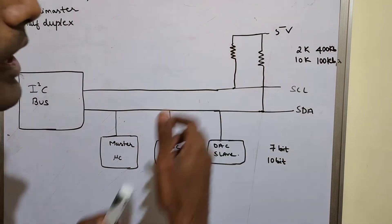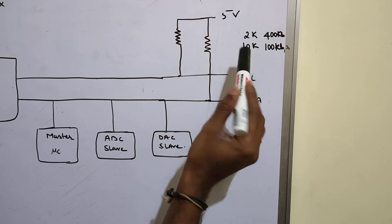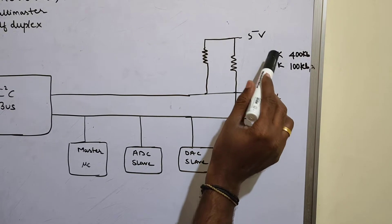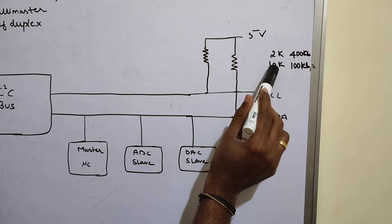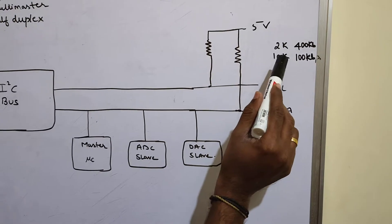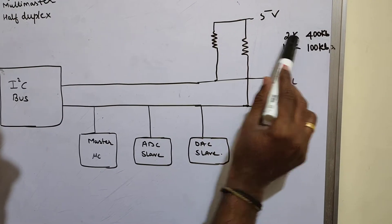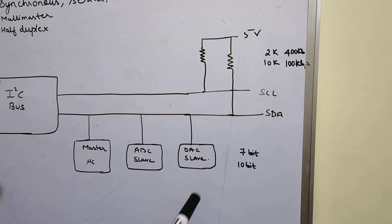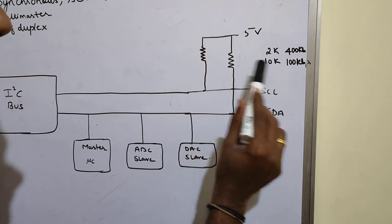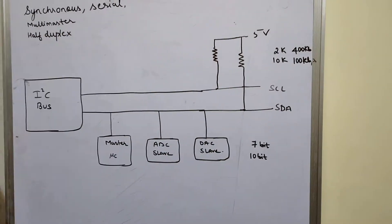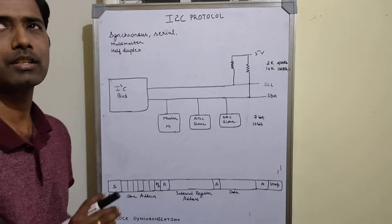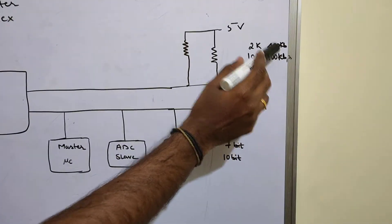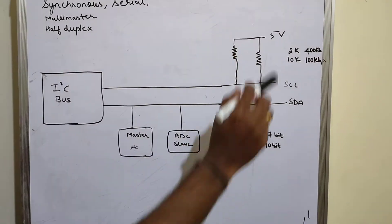To avoid floating values, we use pull-up resistors. The value can be 2kΩ or 10kΩ. If we use a 2kΩ resistor, we can achieve a speed of 400 kbps. If we use a 10kΩ resistor, we get 100 kbps. The standard speed of I2C is 100 kbps, but with a 2kΩ resistor we can achieve up to 400 kbps.